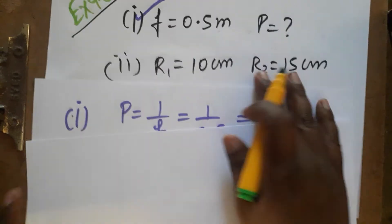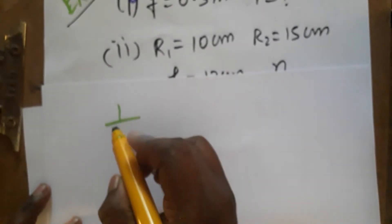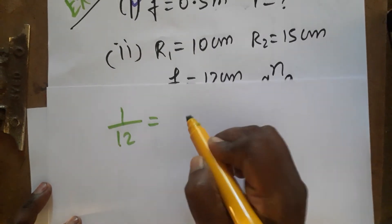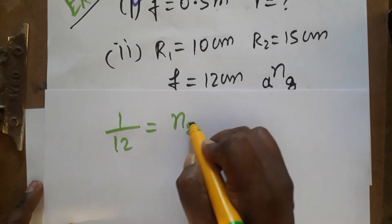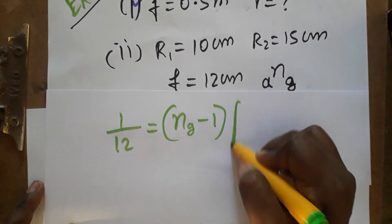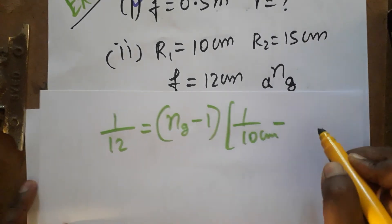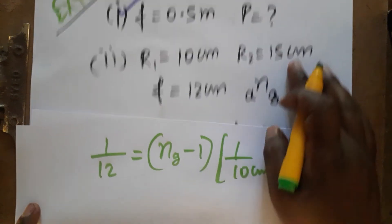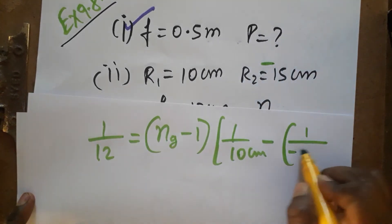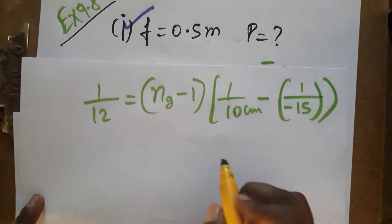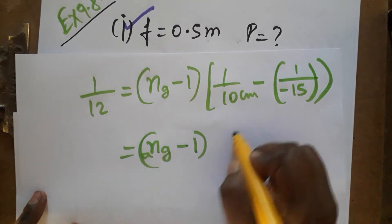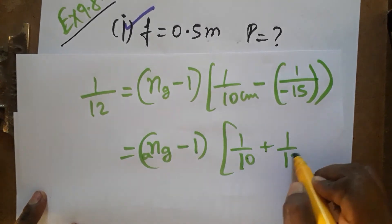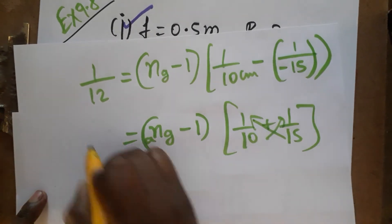Using this condition: focal length is 12 centimeters as given. So we have 1 over 12 = (n_glass minus 1) times (1 over R1 minus 1 over R2). The refractive index of glass is the unknown. First surface R1 is 10 centimeters, and the second surface is 15 centimeters, which we take as negative. So minus negative 15 becomes plus 15, giving us (n_glass minus 1) times (1 over 10 plus 1 over 15).